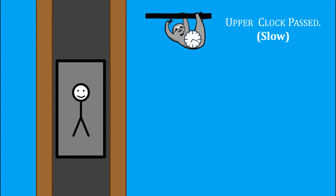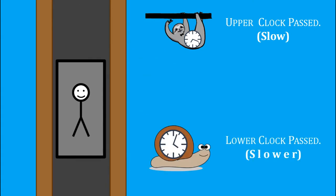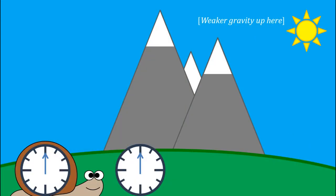By the time it falls past the second clock, it is accelerated to a higher speed, so there is more time dilation, and the second clock ticks even slower than the first. We can use the equivalence principle to show that this means that time will run slower lower down in the gravitational field.